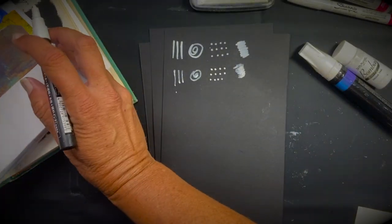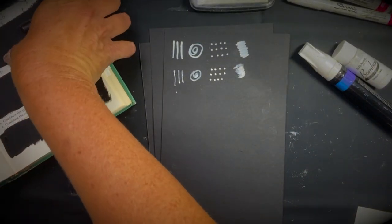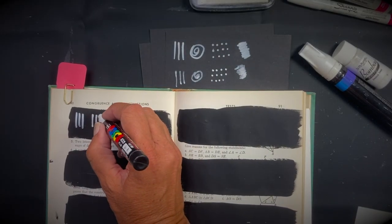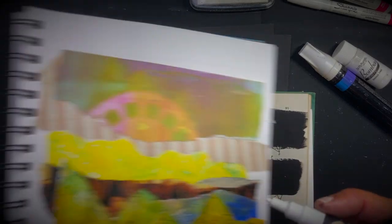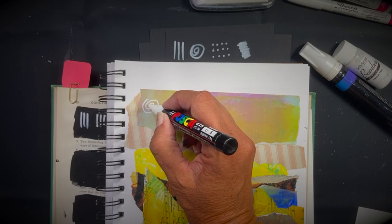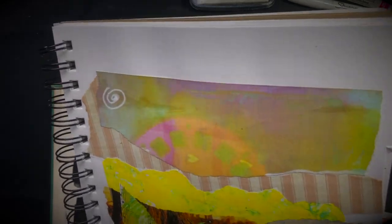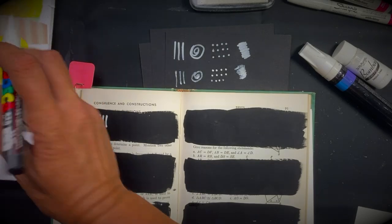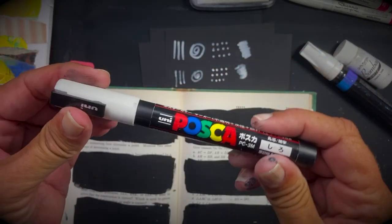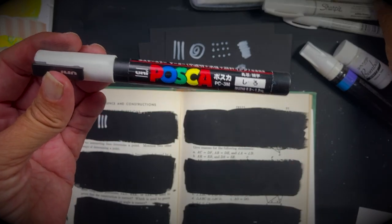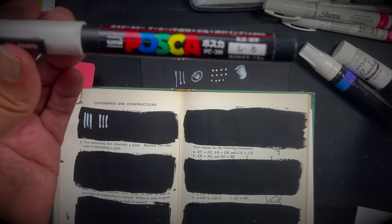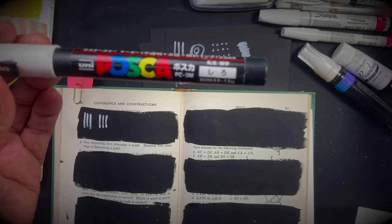I'm going to do it on the black gesso as well. Let's do some marks and then we'll see how this looks on this collage on a colored background. All right. So that is the Posca paint pen and they come in all different thicknesses, different nib sizes.